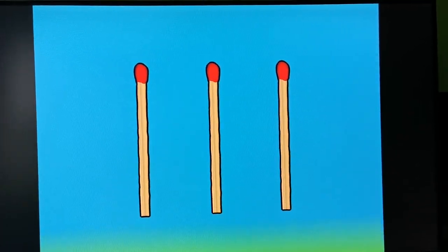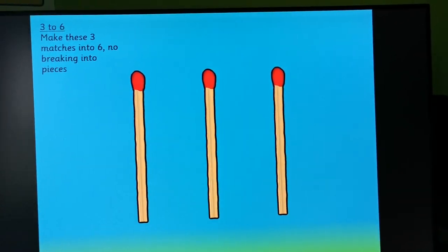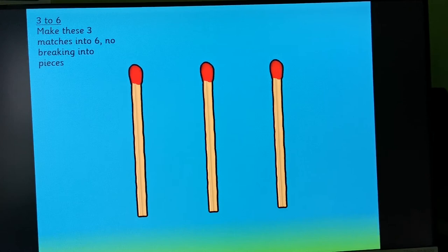So first slide is quite simple, we have three. And then the puzzle will come up with the next click. Three to six: make these three matches into six, no breaking into pieces. Let the children figure out to see if they can get it.